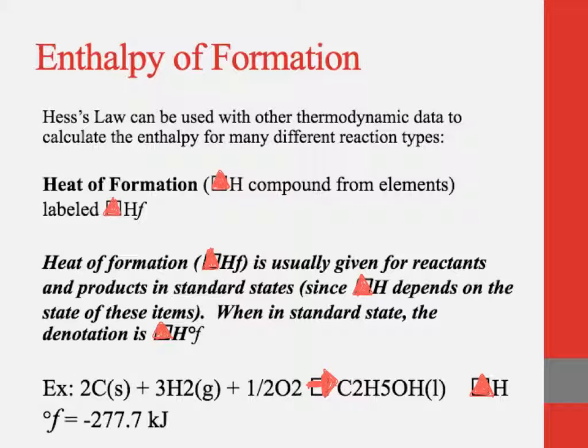Here in this example, you have 2C(s) + 3H2(g) + 1/2 O2 yields one mole of C2H5OH(l). So the delta HF is negative 277 kilojoules. And that's the amount of energy that's needed to form one mole of the product from its elements.